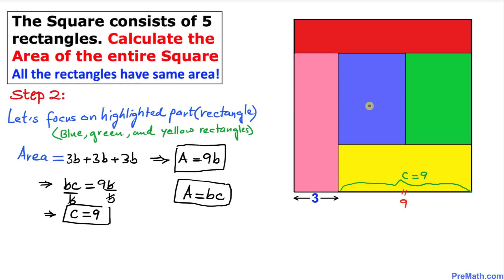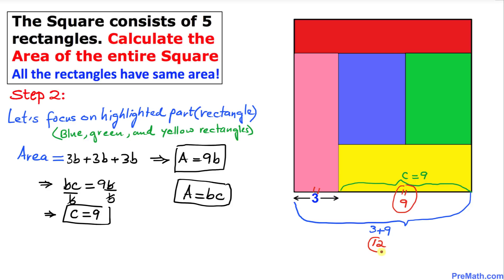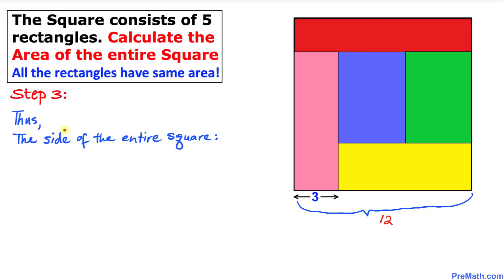Here is our original figure. This side turns out to be 9 units and this side is already 3 units. Therefore the length of this big square is going to be 3 + 9 = 12 units. So the side of this big square turns out to be 12 units on all four sides.